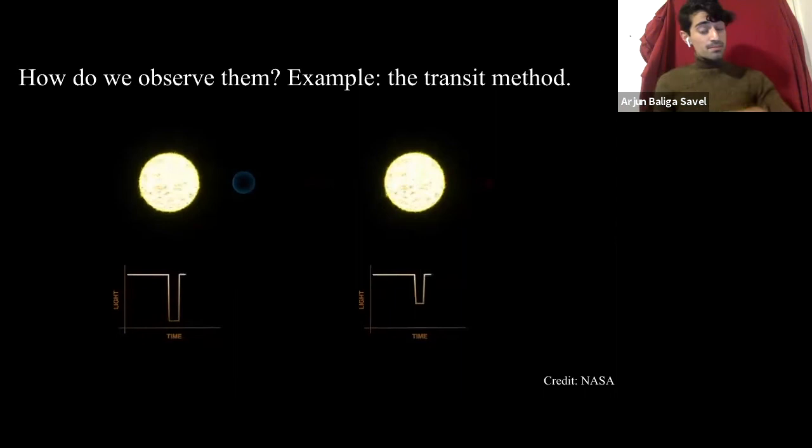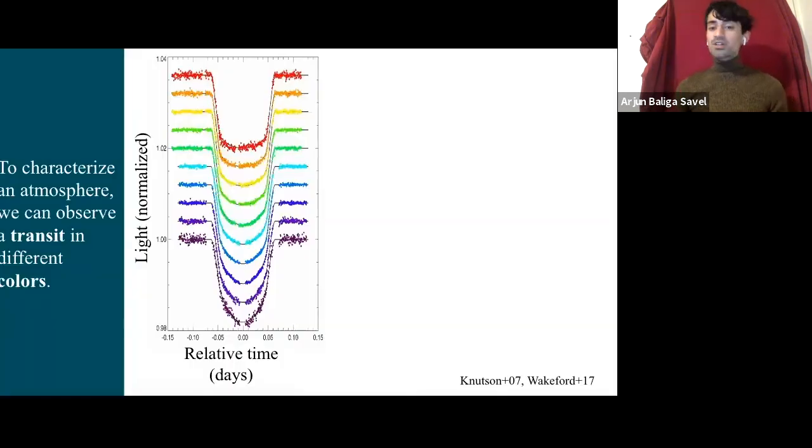The larger the planet, the larger the dip because it's blocking more of its host star's light. Great. So now we know what planets are, and we know one relatively common way to find them. But we're not just interested in finding planets. We're not just interested in finding out how large they are. We'd like to know what's in their atmosphere. And to do that, we apply that same technique, that same transit technique, and we just do it for a variety of different colors. So first we say, okay, well, this is how much light we're receiving from the star that's red, and then the planet blocks some of that light, and then it doesn't block it anymore. And we repeat that. Orange, green, blue, violet. Great.